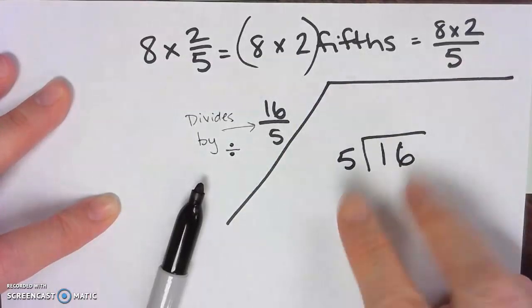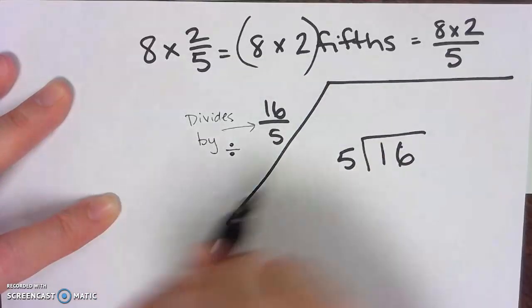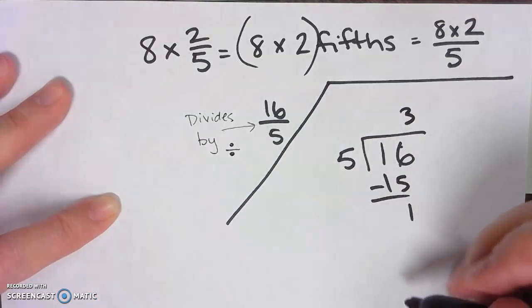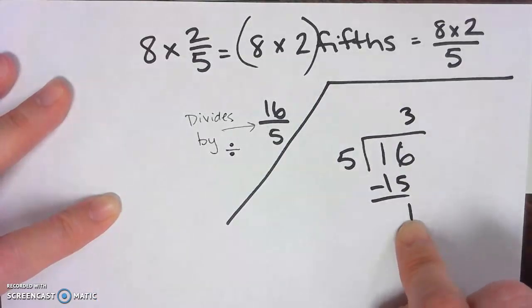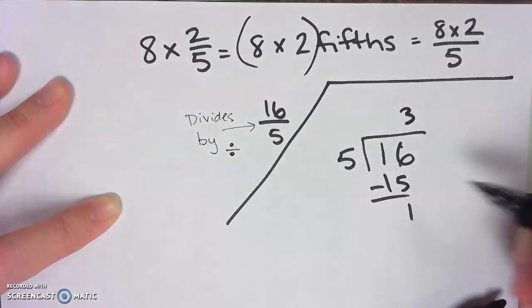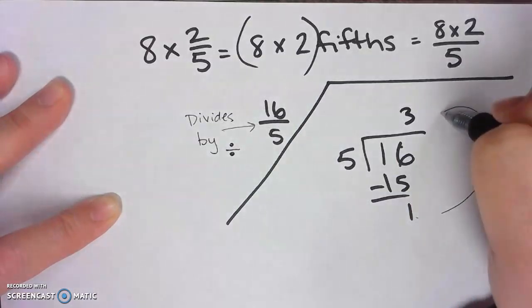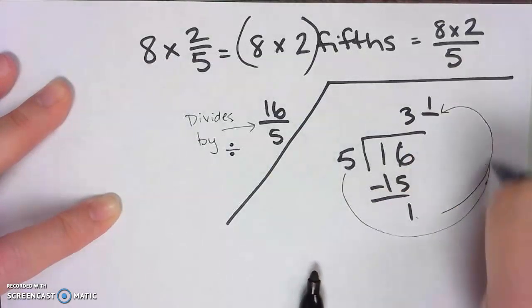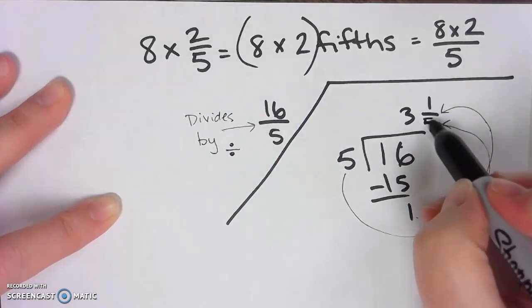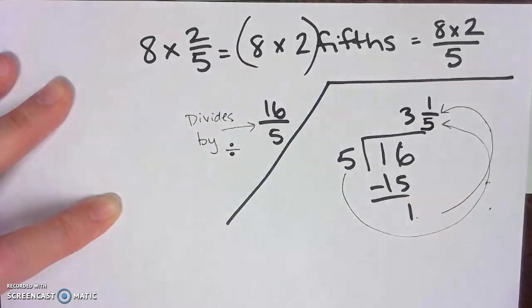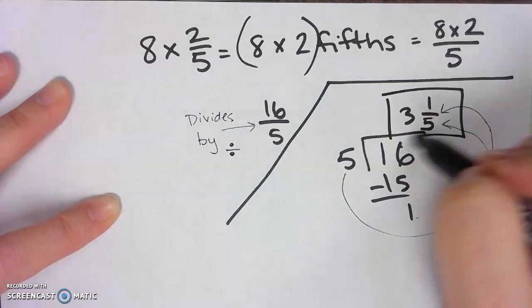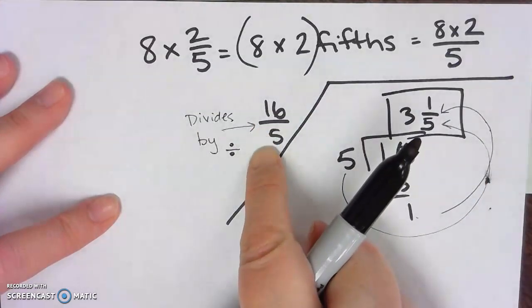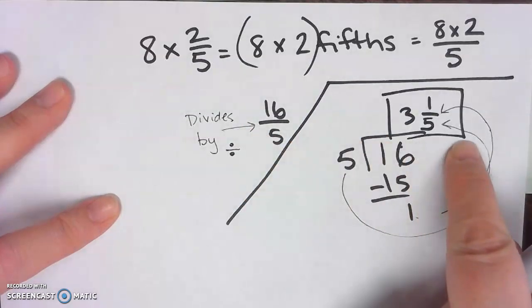Well, 5 goes into 16... five, ten, fifteen... oh, three times, with one left over. And we have to write this remainder one as a fraction. So the one goes on the top, and the five goes on the bottom, giving us 3 and 1/5.